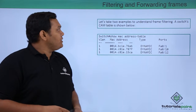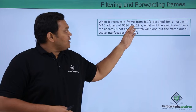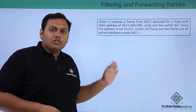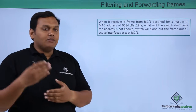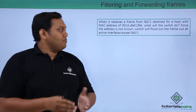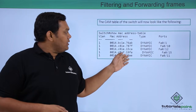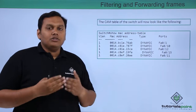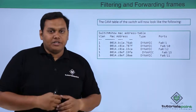If the switch receives a frame from FA 0/1 destined for a host with MAC address 19FA, and 19FA is not available in the MAC address table, the switch will flood the frame out to all other interfaces except FA 0/1. As a result, the table gets updated with the entry that 19FA is on Fast Ethernet 0/15. This is the process of frame filtering and forwarding.